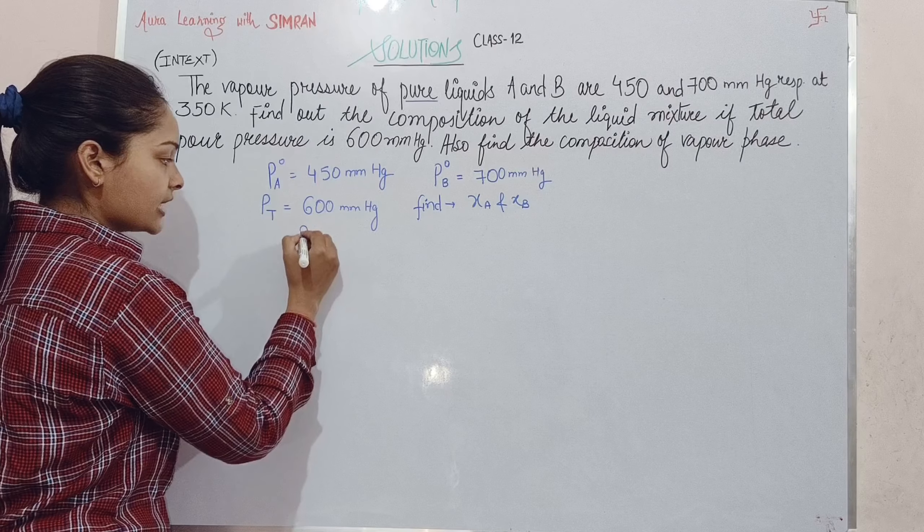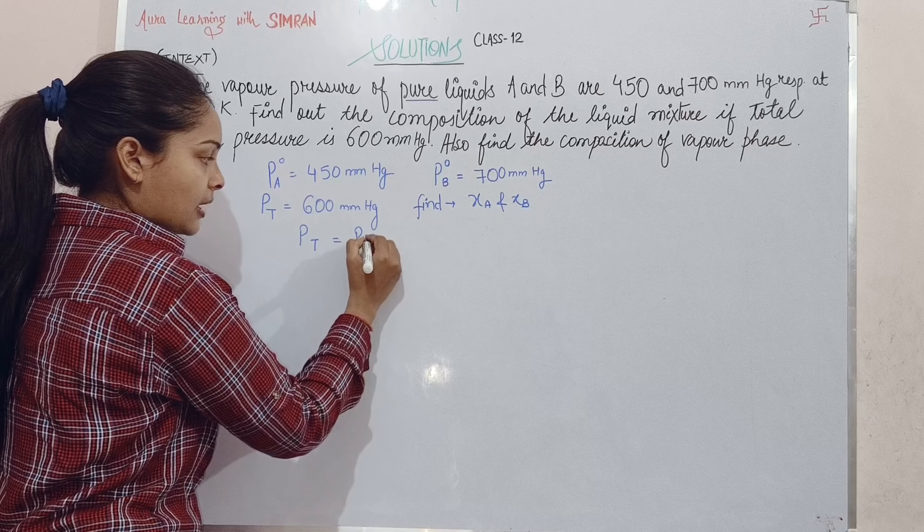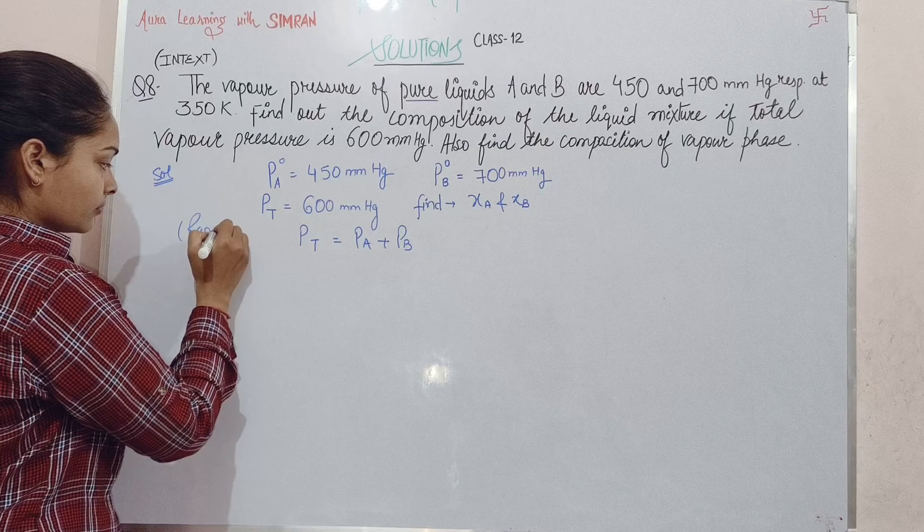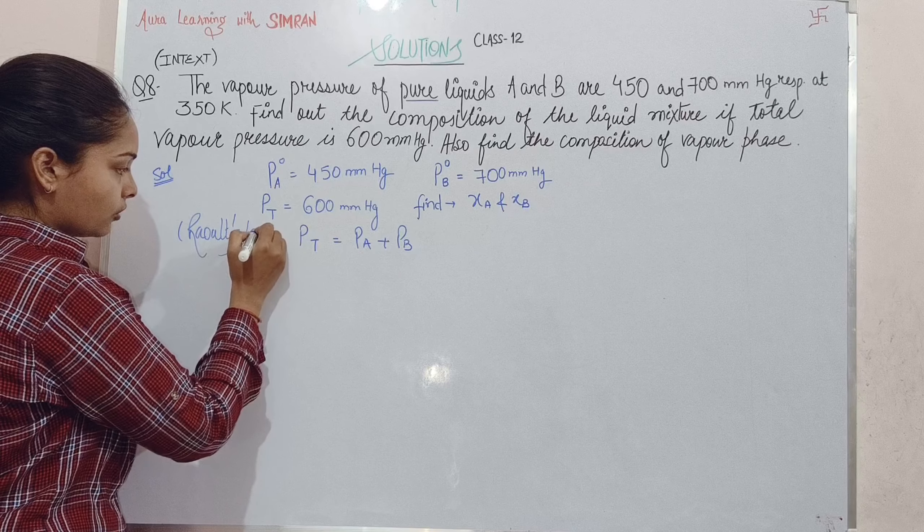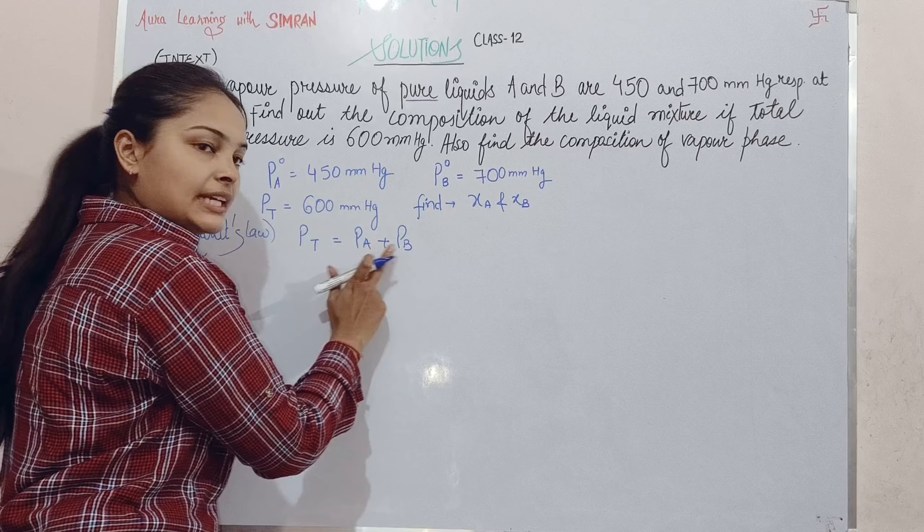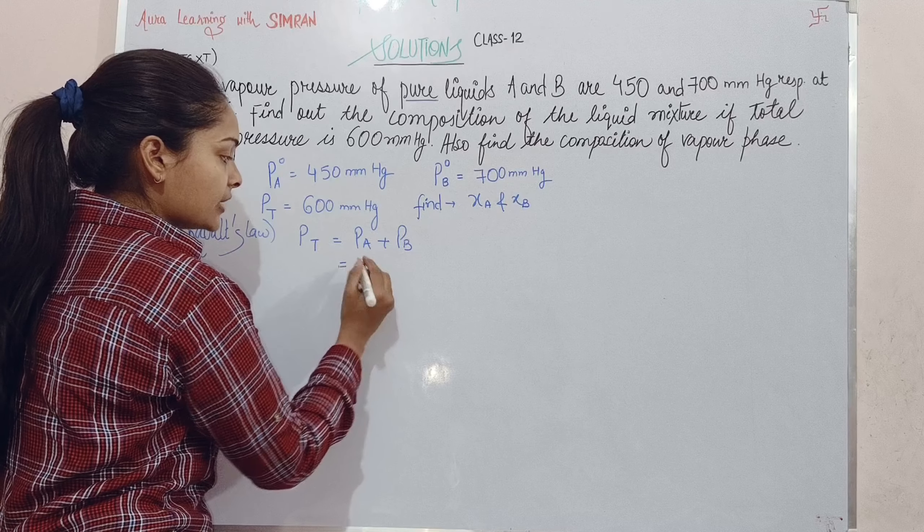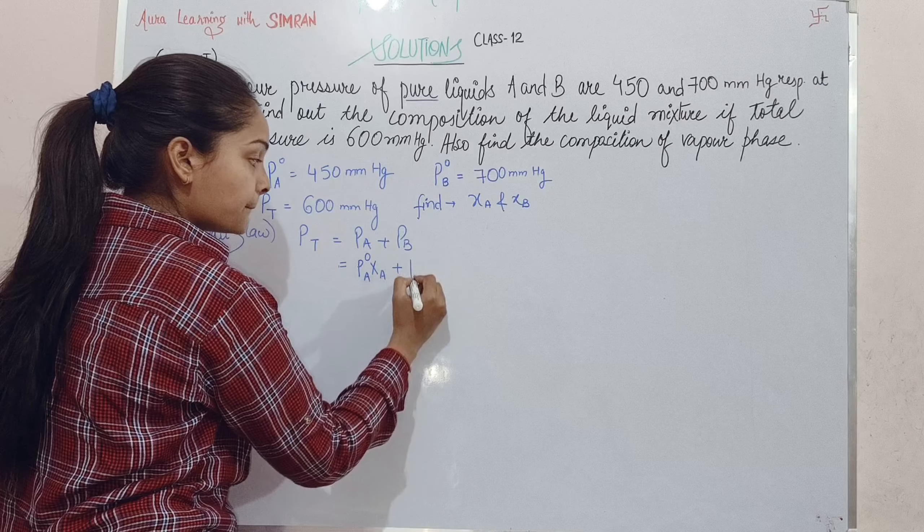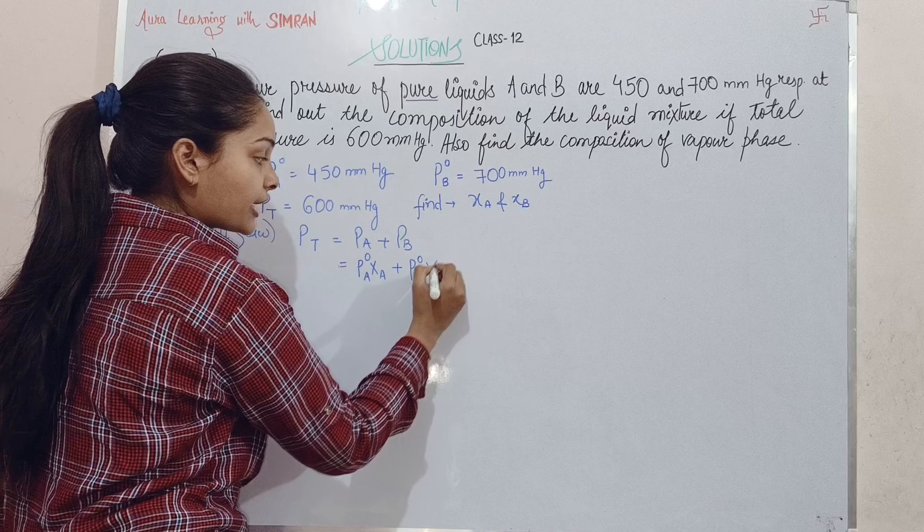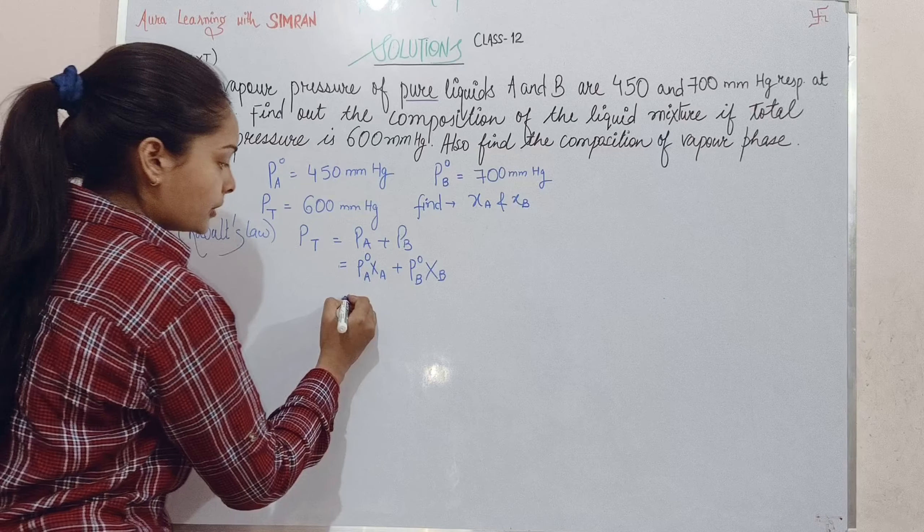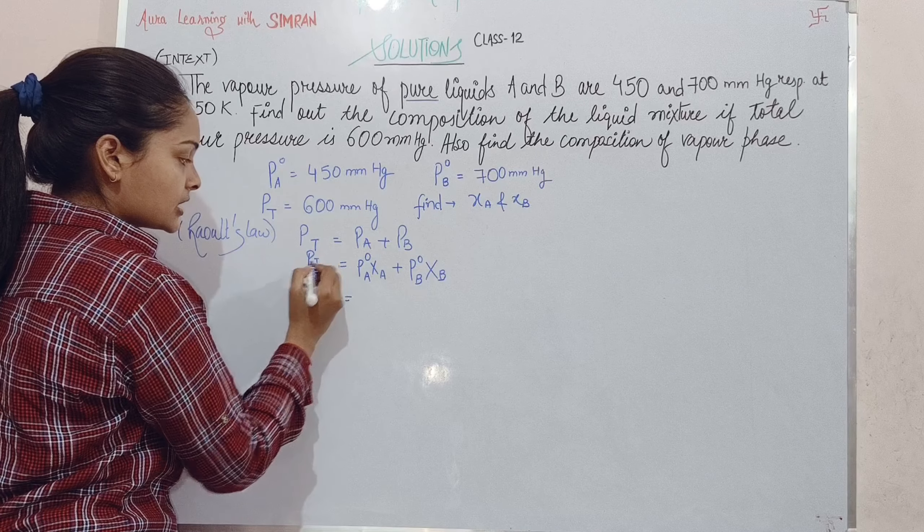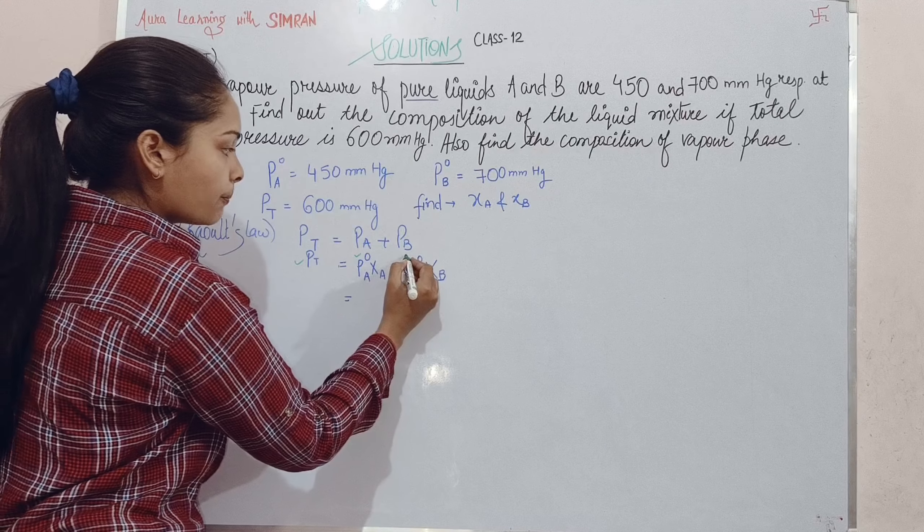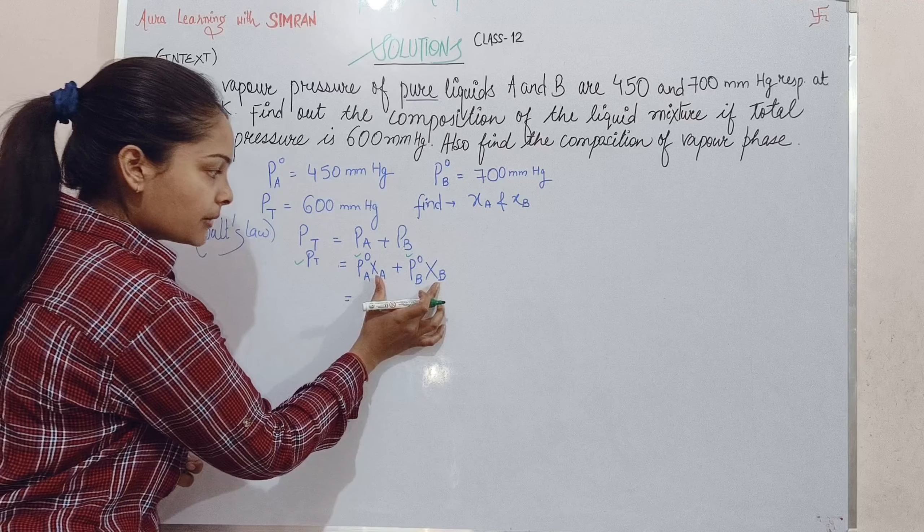If total pressure Pt equals PA plus PB, where PA is P°A·χA and PB is P°B·χB. I have Pt given, P°A given, and P°B given. I have one equation but two variables - χA and χB.